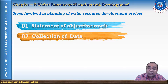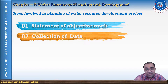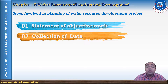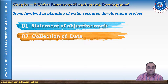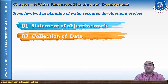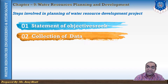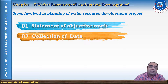Then hydropower data — the need for electricity from that particular project, variation in power generation and demand, and alternative energy sources available. Then flood control data — records of past floods and the damages from those floods. Then navigational data, recreational data, and population control data — these are also very important data that should be collected when planning for the water development project.